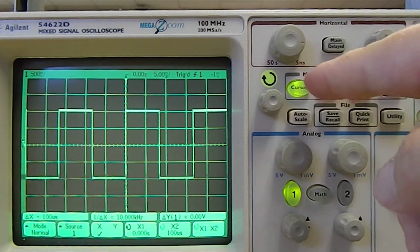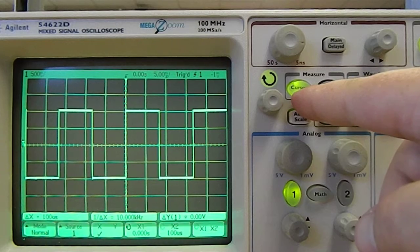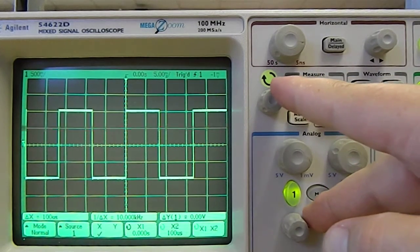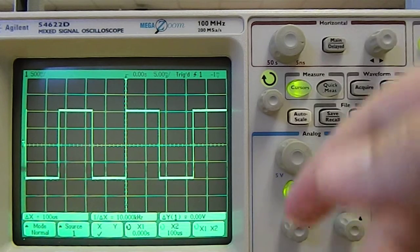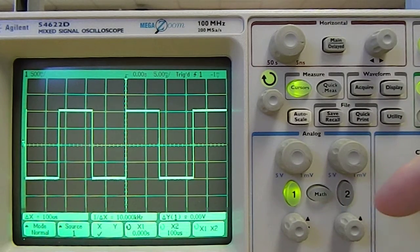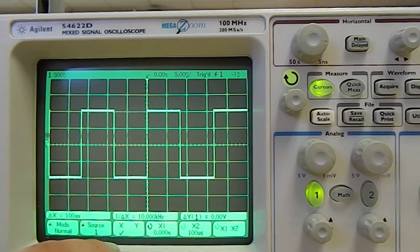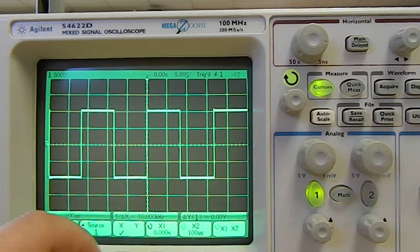All right, so now that I've clicked Cursors, I actually have two X and two Y cursors, and what I can do is measure the distance between them. And so you can see that this menu down here has come up, and I can choose whether I want to change the X or the Y using this soft key.